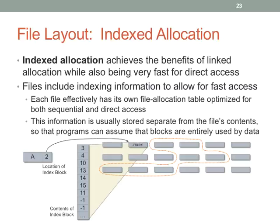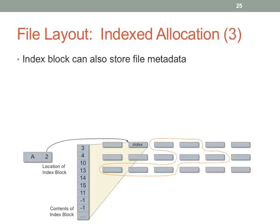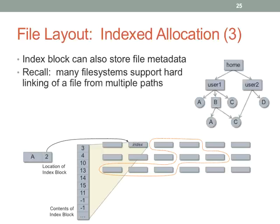The index is separated out — the orange dotted chunk is the file data itself, and the index is associated with the file, which is what the directory entry points to. The index knows which blocks the file is comprised of. Both direct and sequential access are fast — you load the index and use it to figure out which block, which is pretty fast. If a file is used frequently, its index information will be in the file system cache. You can also store metadata in the index block, which is great for hard links.